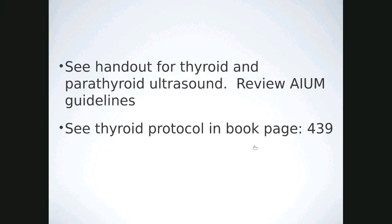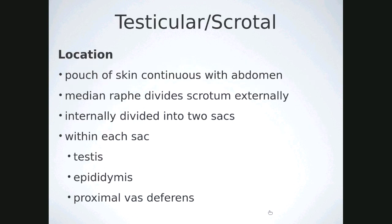Reference the AIUM guidelines and read the book protocol for this organ — and make sure you're doing all the practice questions and workbook assignments. The scrotum is a pouch of skin continuous with the abdomen. The median raphe is the exterior division of the scrotum. Internally it's divided into two sacs by a membrane. Within the sac we have the testes, the epididymis, the proximal vas deferens, blood vessels, and related structures.